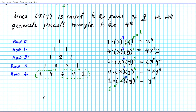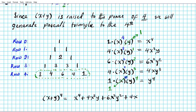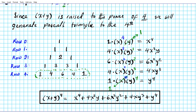Lastly, one times one times y to the fourth is simply y to the fourth. The fully expanded form of x plus y to the fourth power is: x to the fourth plus four x to the third y plus six x squared y squared plus four x y to the third plus y to the fourth.